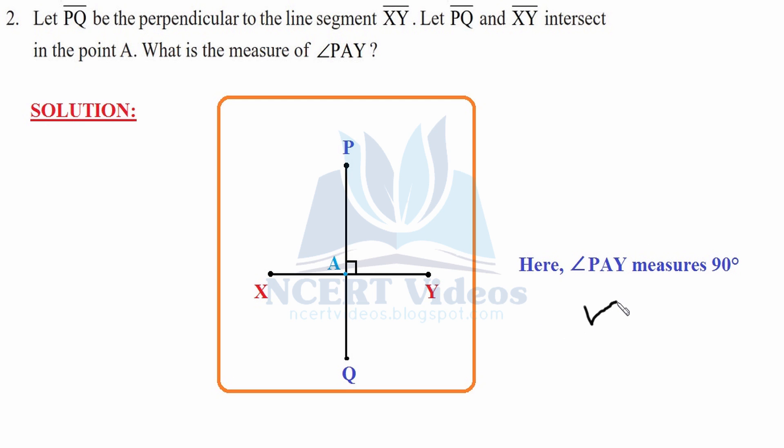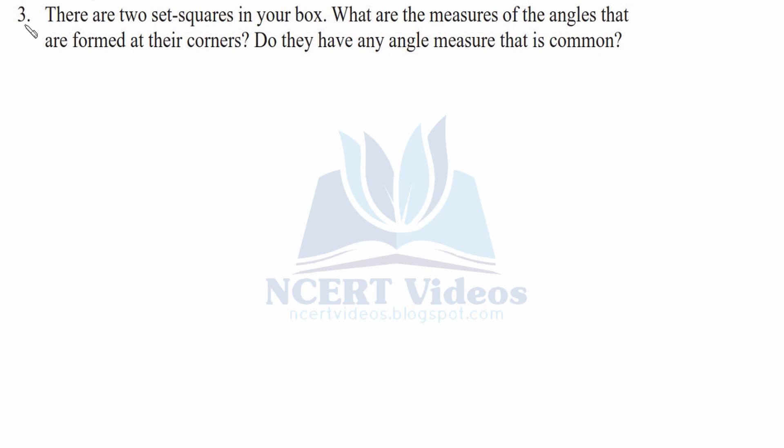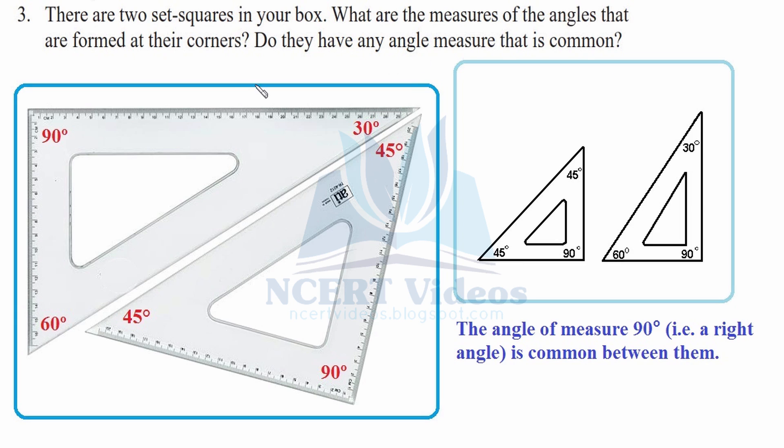Question 3: There are two set squares in your box - that is, in your geometric box. What are the measures of the angles that are formed at their corners? Do they have any angle measure that is common?